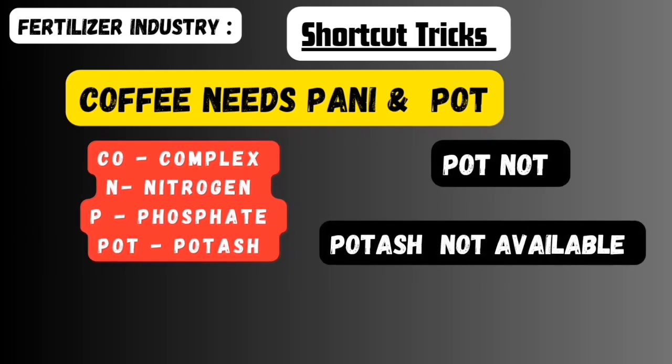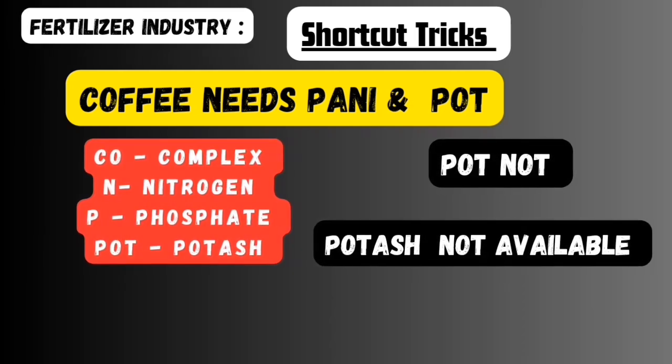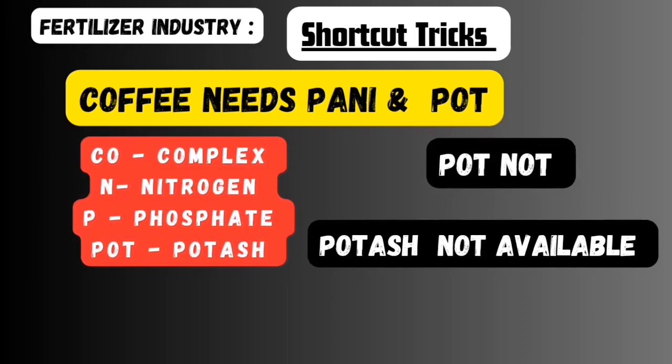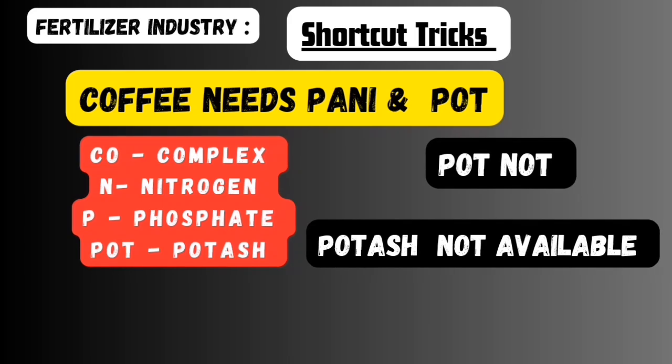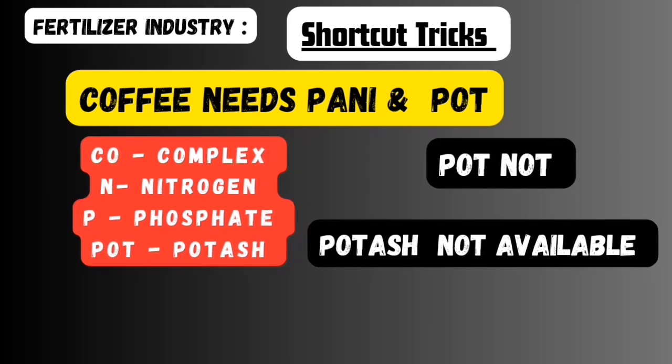The second shortcut is: Coffee needs pani and pot. When we want to prepare coffee we need pani and pot, so this is the shortcut. Let's see the explanation. Take the word 'coffee' — CO represents complex. Then take the word 'needs' — N represents nitrogen. 'Pani' — the first letter P represents phosphate.